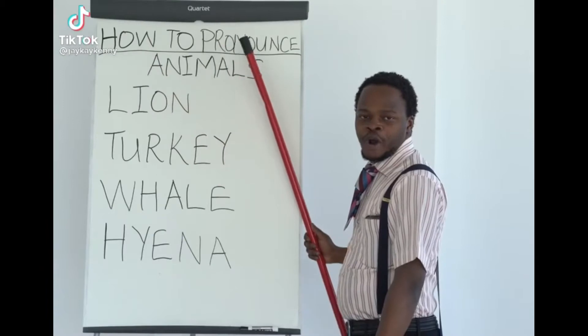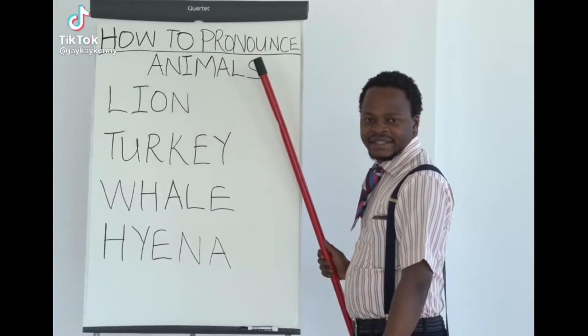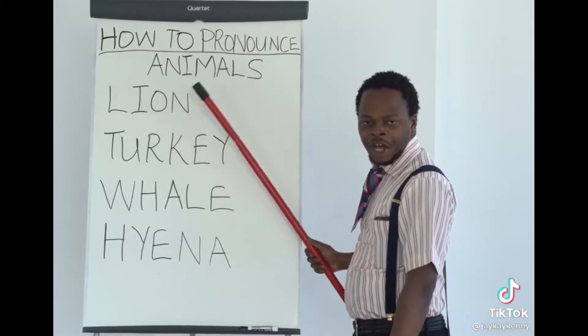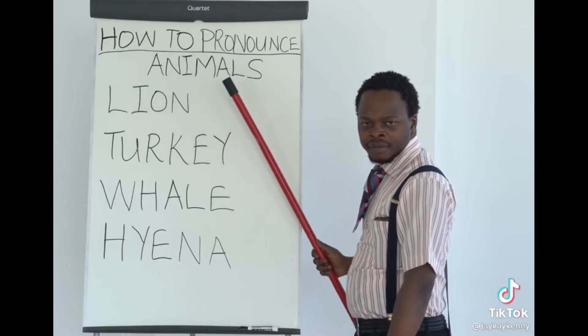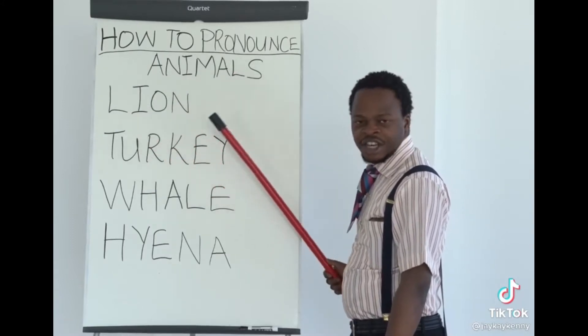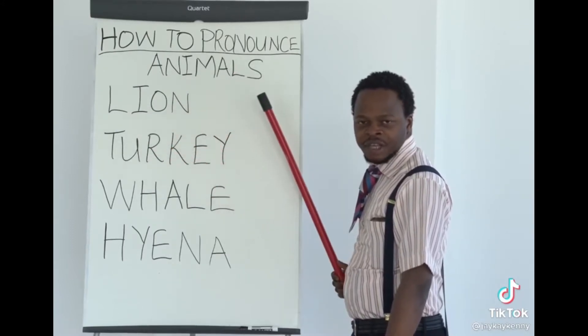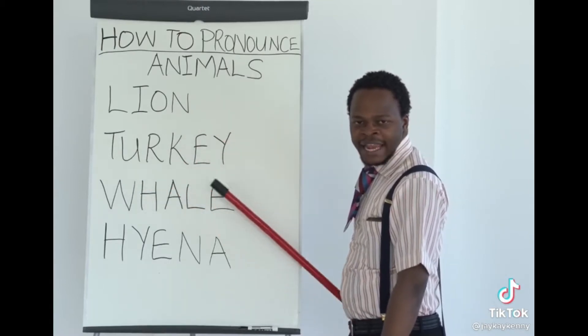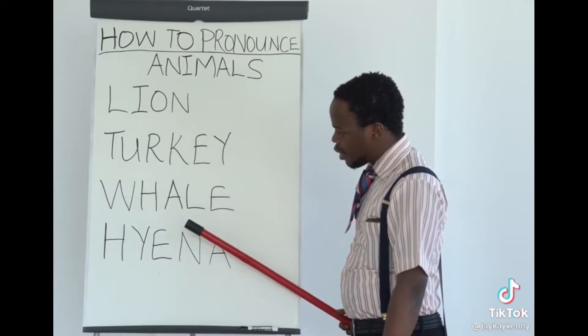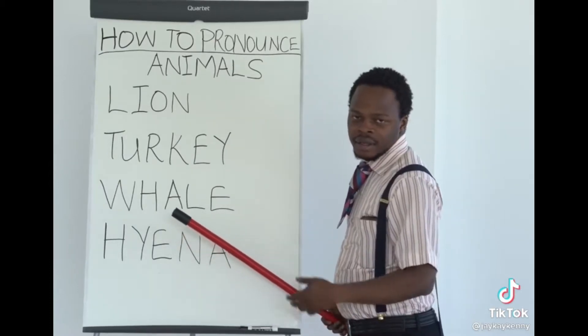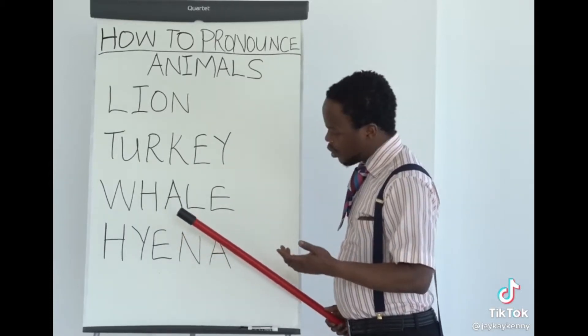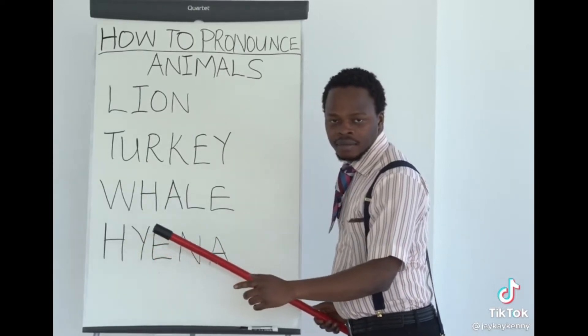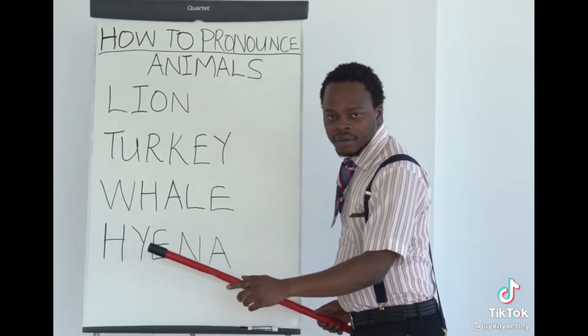How to pronounce animals. Lion, lion. Turkey, turkey. Whale, whale. Hyena, hyena. English.